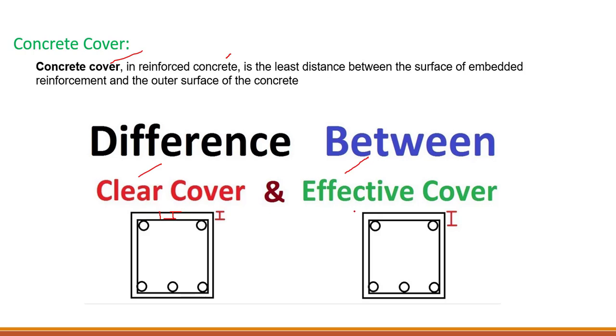Effective cover is from the outer surface of the concrete up to the center of the main bar. Suppose this is our column, or it could be a beam as well. From the outer edge of the concrete up to the center of the main bar, this is called effective cover.